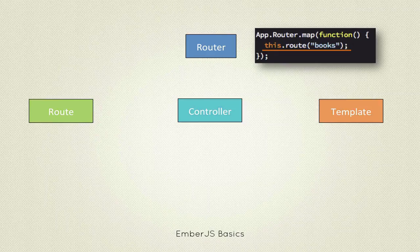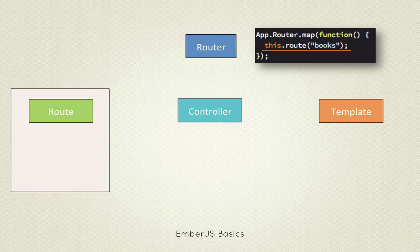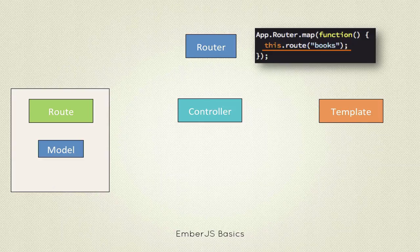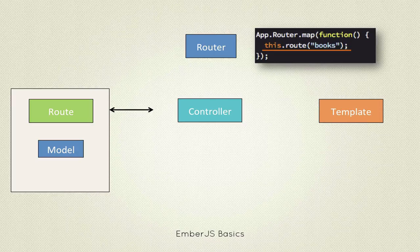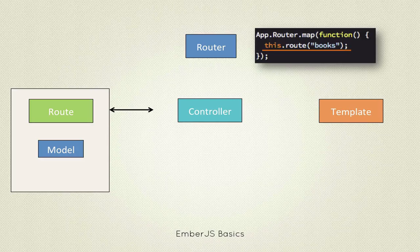When we go to the books URL, execution goes to the books route object. The responsibility of a route object is to tell the template which model it should display, and it does this by binding the model to a controller. This model can be any JavaScript standard object, Ember object, or Ember Data object - it doesn't really matter. It can fetch data from a server or from a third-party application.